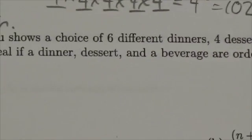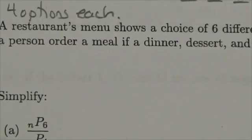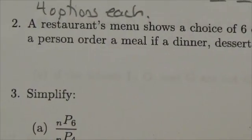The question is: how many ways can a person order a meal if a dinner, dessert, and beverage are ordered? So one of each.